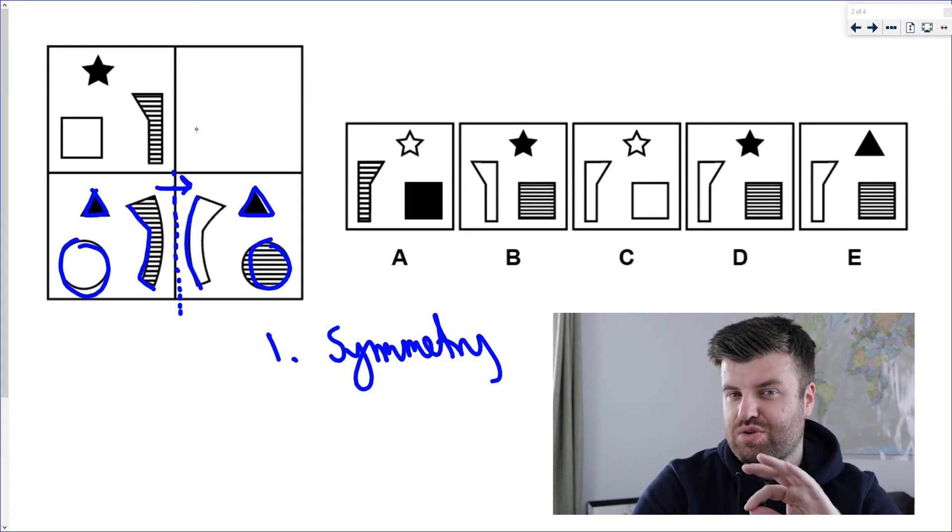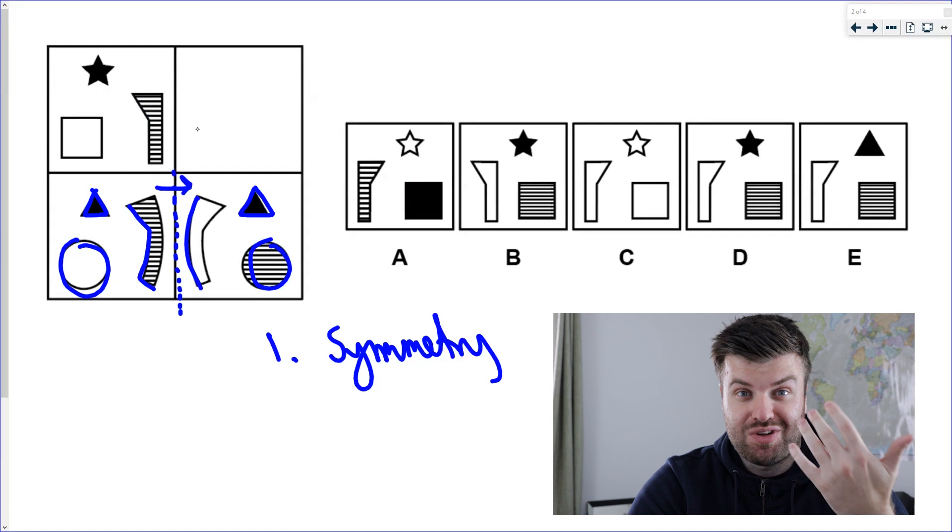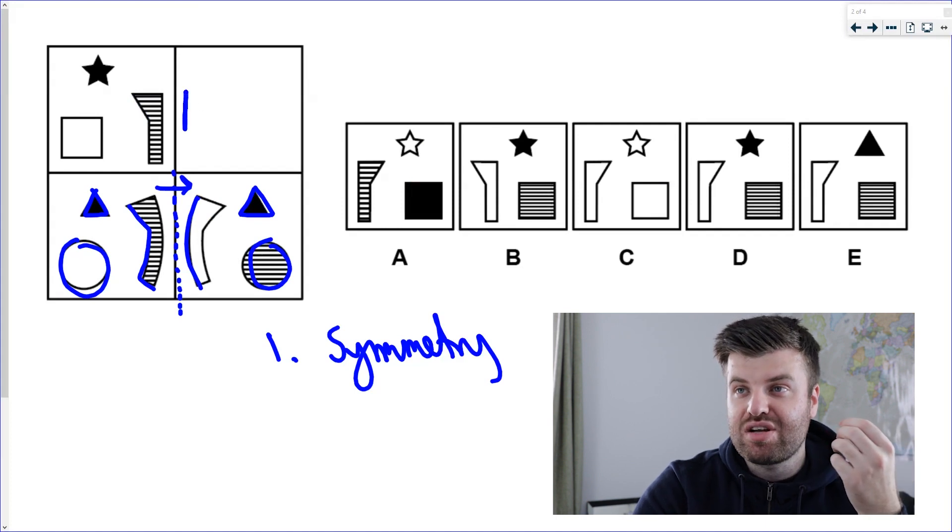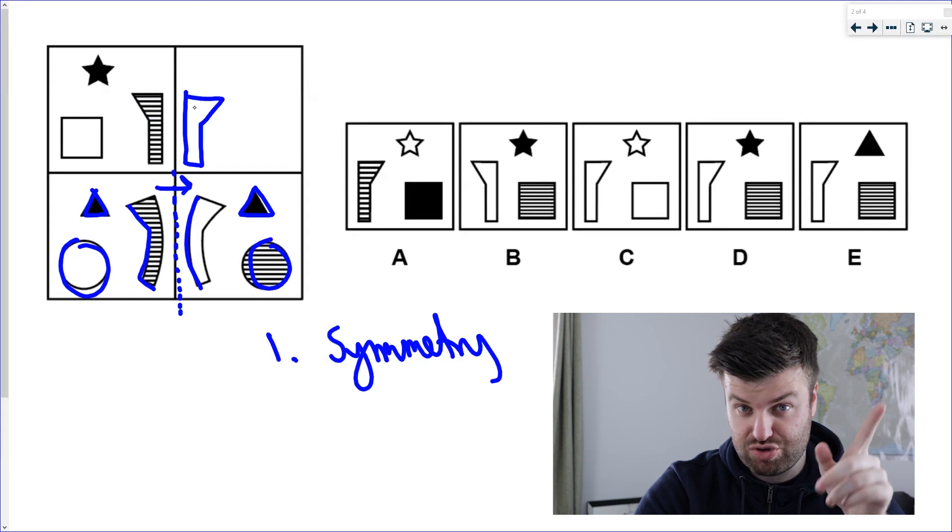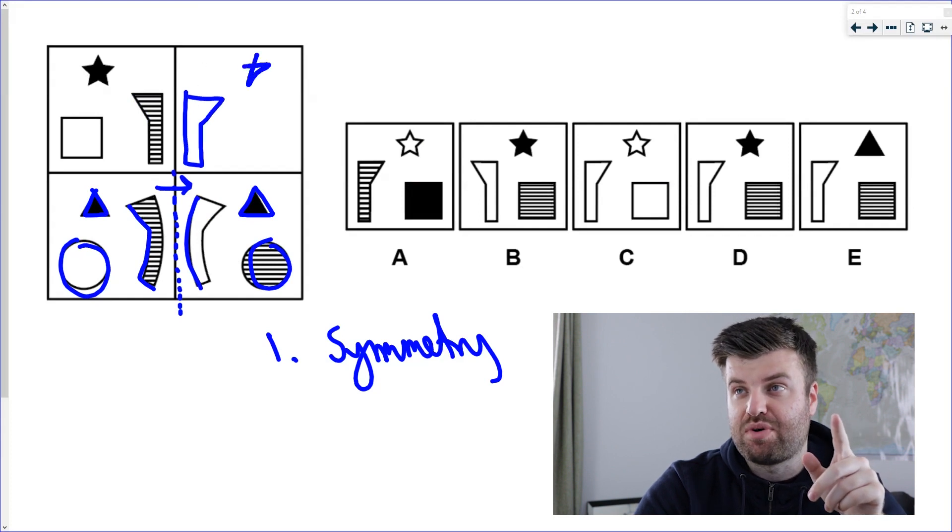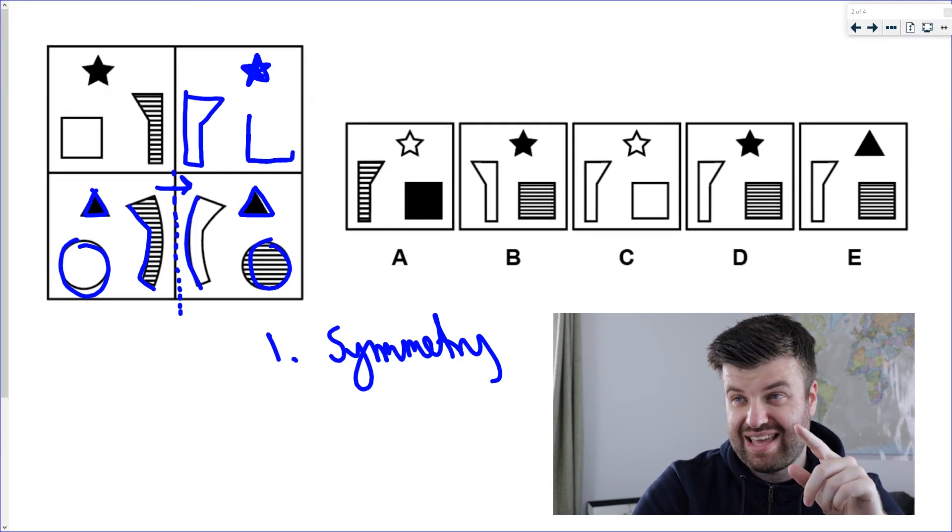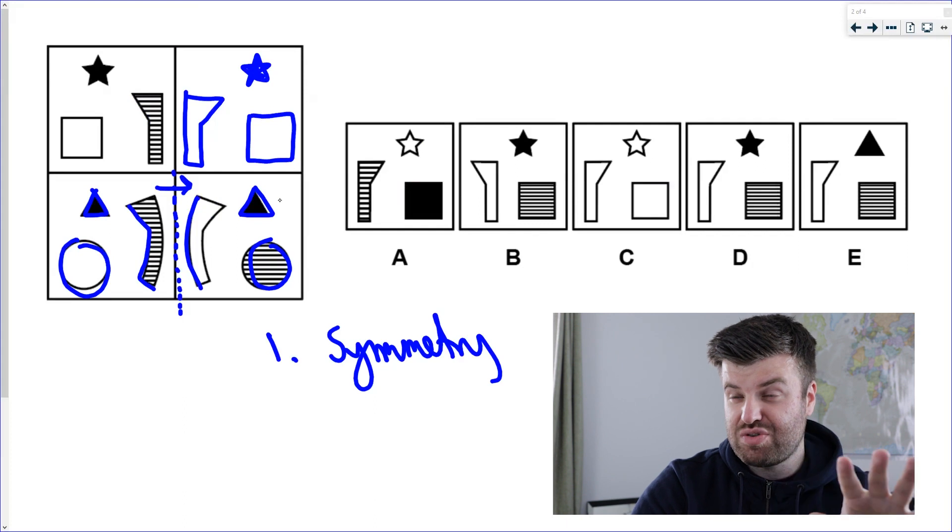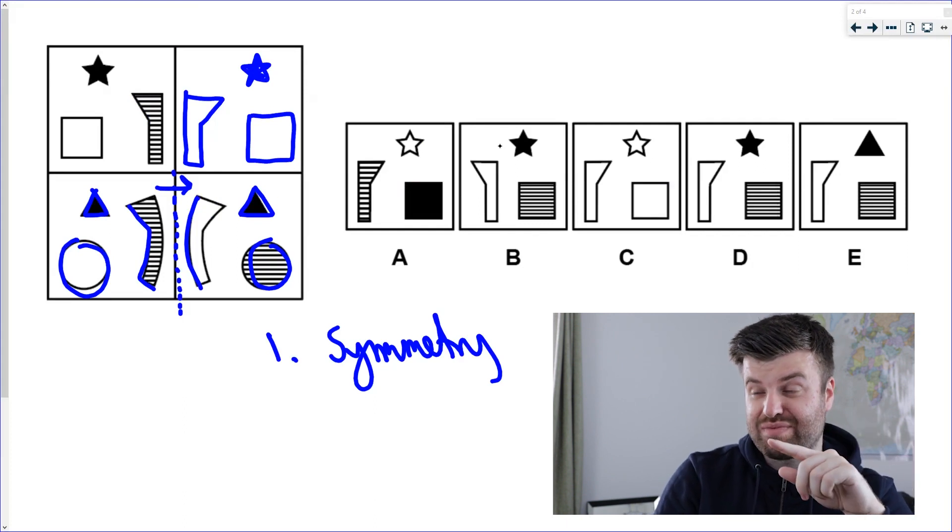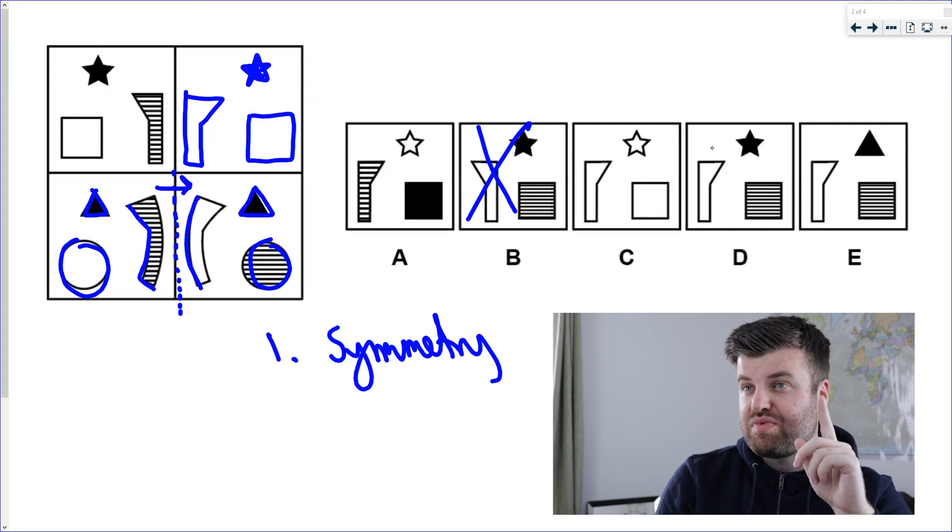So our next top tip for this question type is to draw on the paper. I'm going to start sketching what it might look like with the first step of symmetry, and it doesn't have to be spot on, just something rough for you to work from. So we've got the star, the other shape on the side, and now we're going to have a square over here. So just using step one means we can probably get rid of a few—we can get rid of B because that shape's going the wrong way, and we can get rid of E because it's a triangle at the top; it needs to be a star.